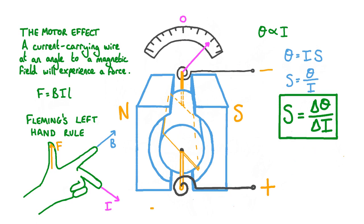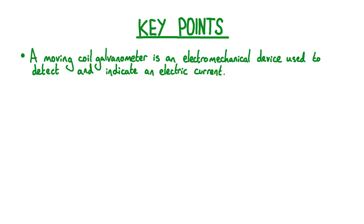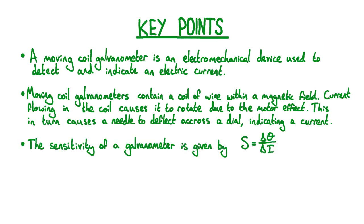To recap the key points: a moving coil galvanometer is an electromechanical device used to detect and indicate an electric current. It consists of a coil of wire within a magnetic field; current flowing in the coil causes it to rotate due to the motor effect, which in turn causes a needle to deflect across a dial indicating the current. Galvanometers with zero in the center of the dial are capable of indicating the direction of the current. Finally, the sensitivity of a galvanometer is given by S = delta theta / delta i.